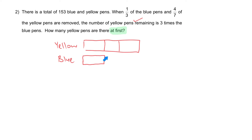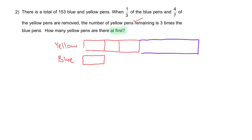Working backwards: before this, 4/7 of the yellow pens were removed. If you remove 4 out of 7, you are left with 3 out of 7 — a very nice number. So we just add the four units back.